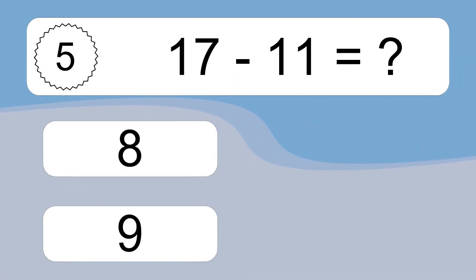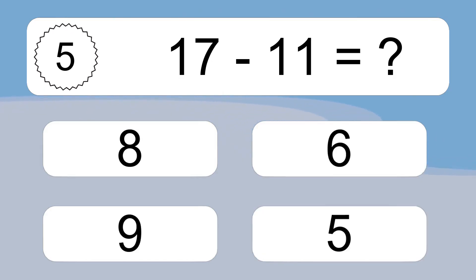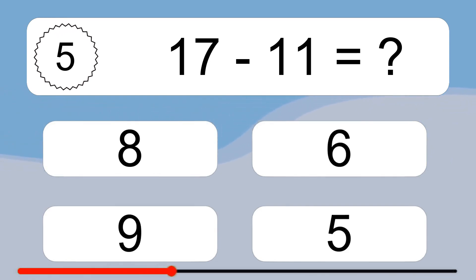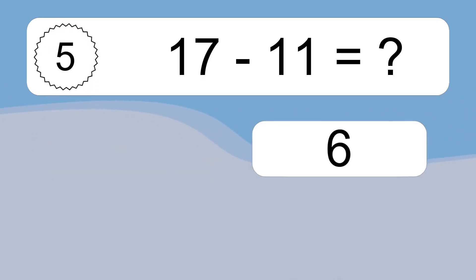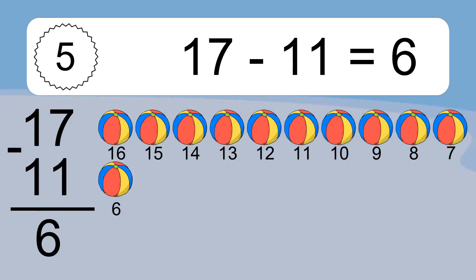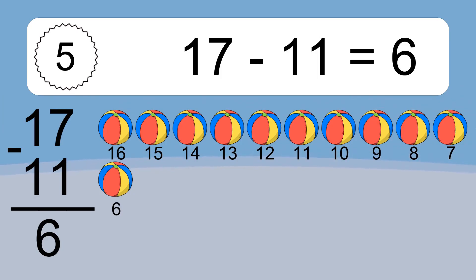17 minus 11 equals what? 17 minus 11 equals 6. Let's count it. 16, 15, 14, 13, 12, 11, 10, 9, 8, 7, 6.